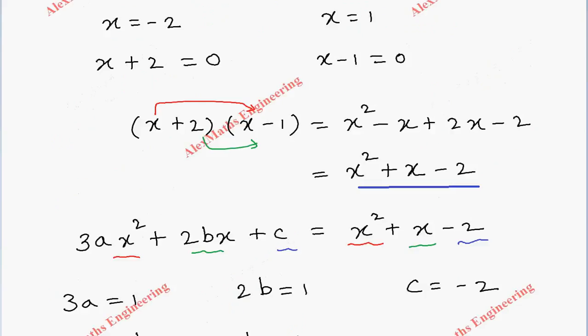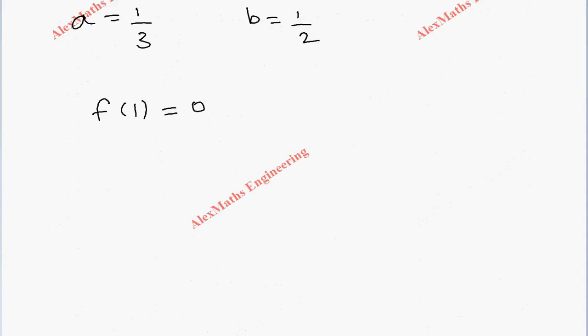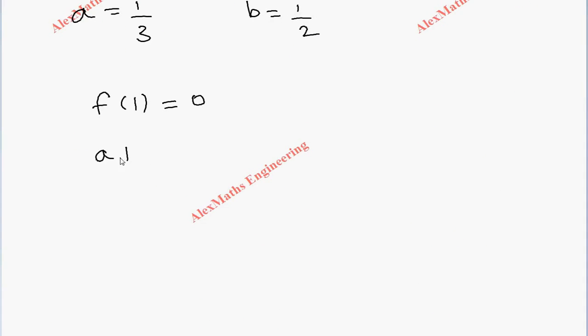Now f(1), we have to substitute 1 in f(x) wherever x is there. So ax³ plus bx² plus cx plus d. So we get a plus b plus c plus d totally. So we get a plus b plus c plus d equal to 0.